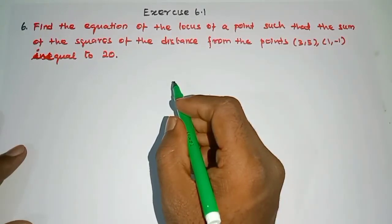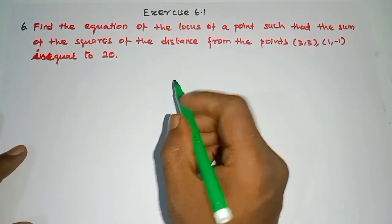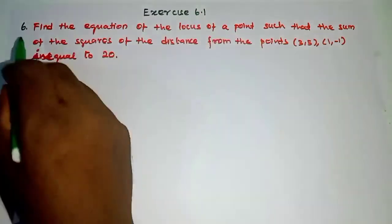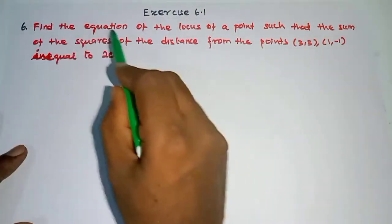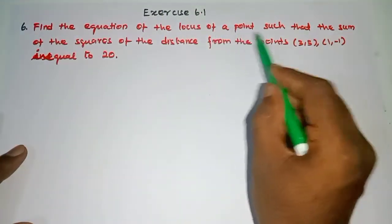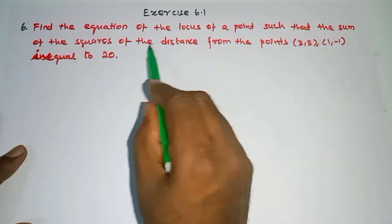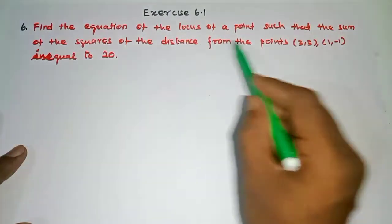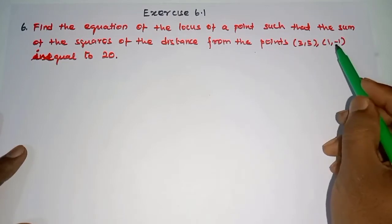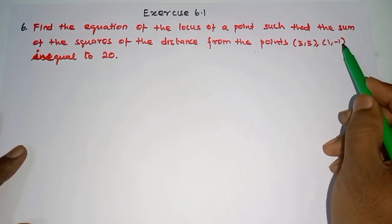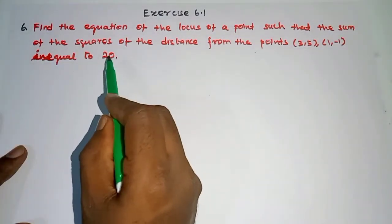Hi student, this is Silamma Max Tuition. Learn standard XA, question number 6. Find the equation of the locus of a point such that the sum of the squares of the distances from the points (3, 5) and (1, -1) is equal to 20.